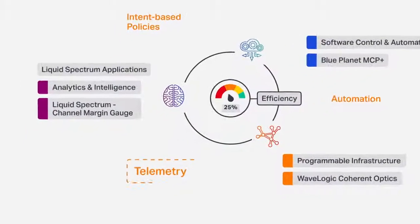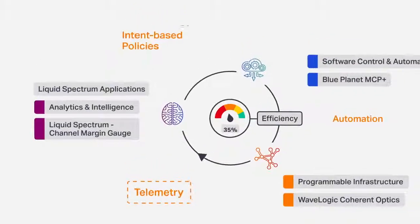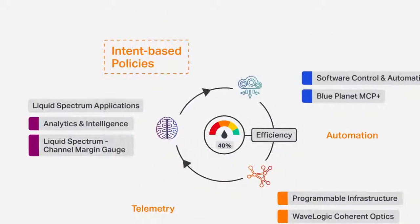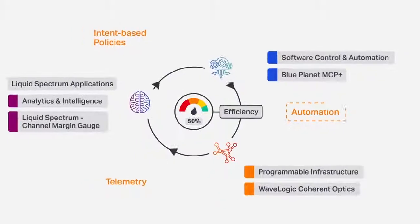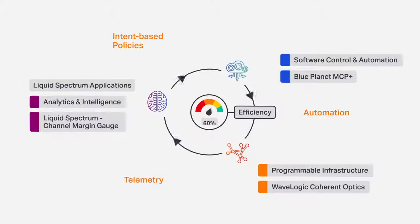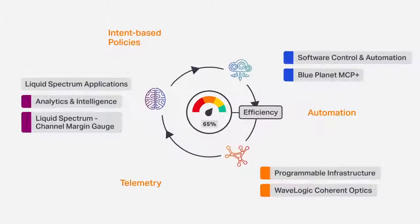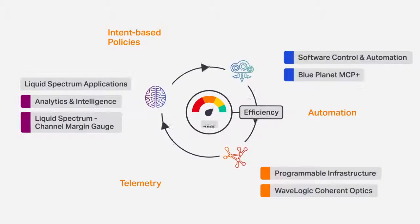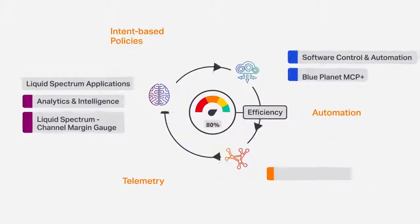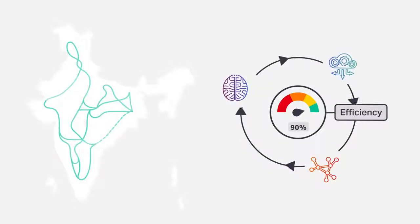To change the way optical networks are managed moving forward, systems must provide real-time monitoring of data including power levels, dispersion measurement, and even signal-to-noise ratios, allowing the systems to determine the optimal amount of capacity that can be achieved for a given link and the ability to tune the system to that capacity.